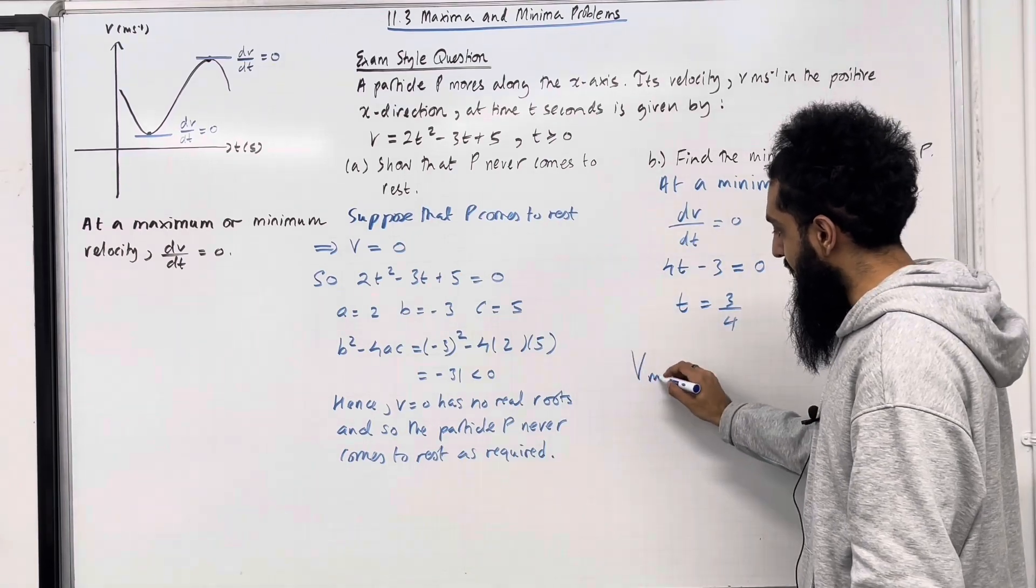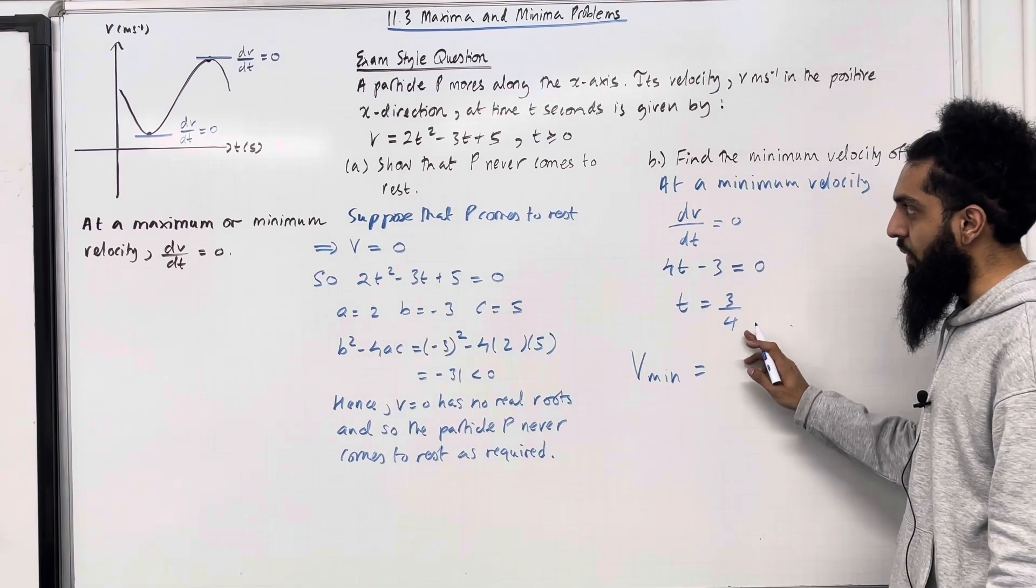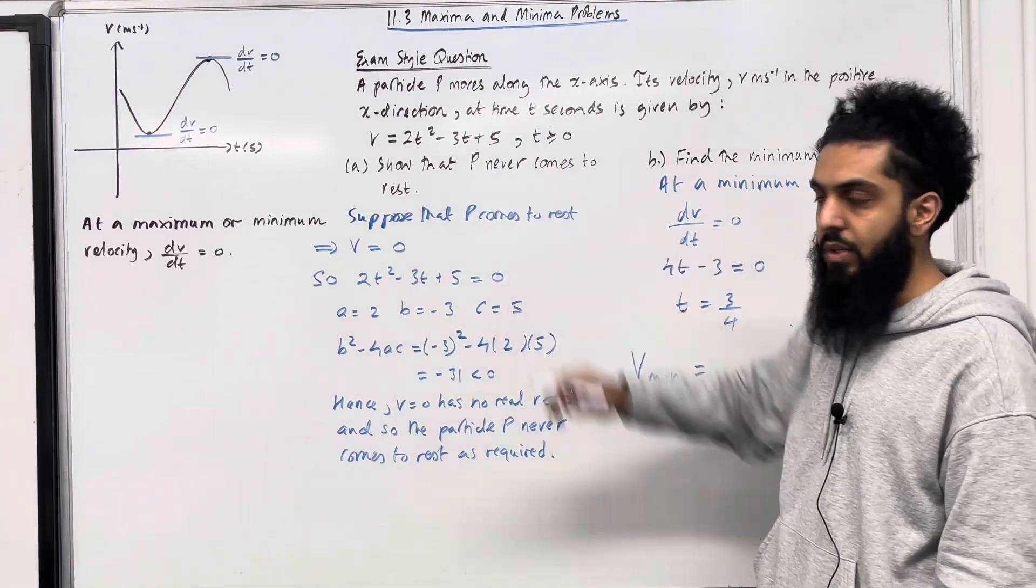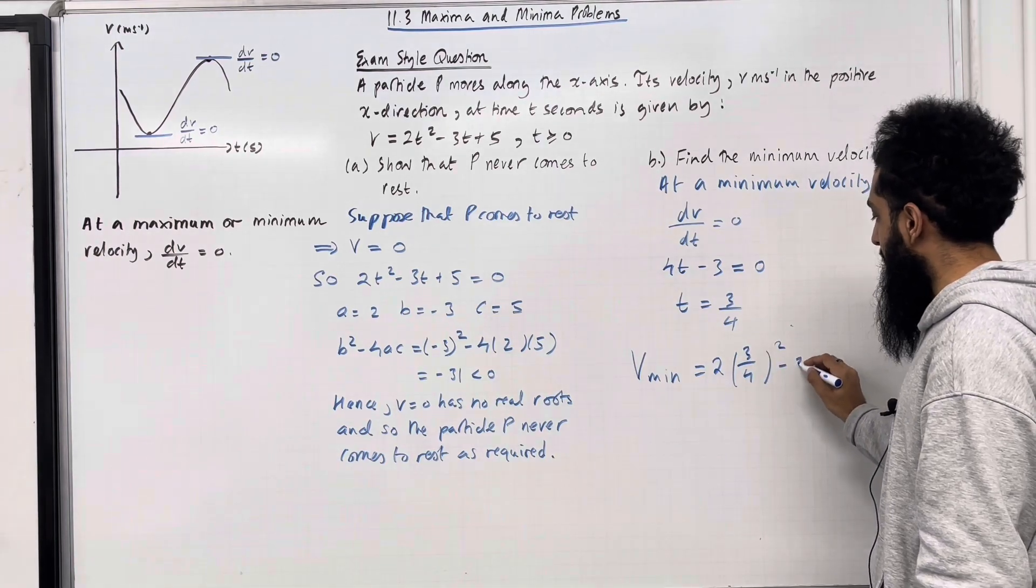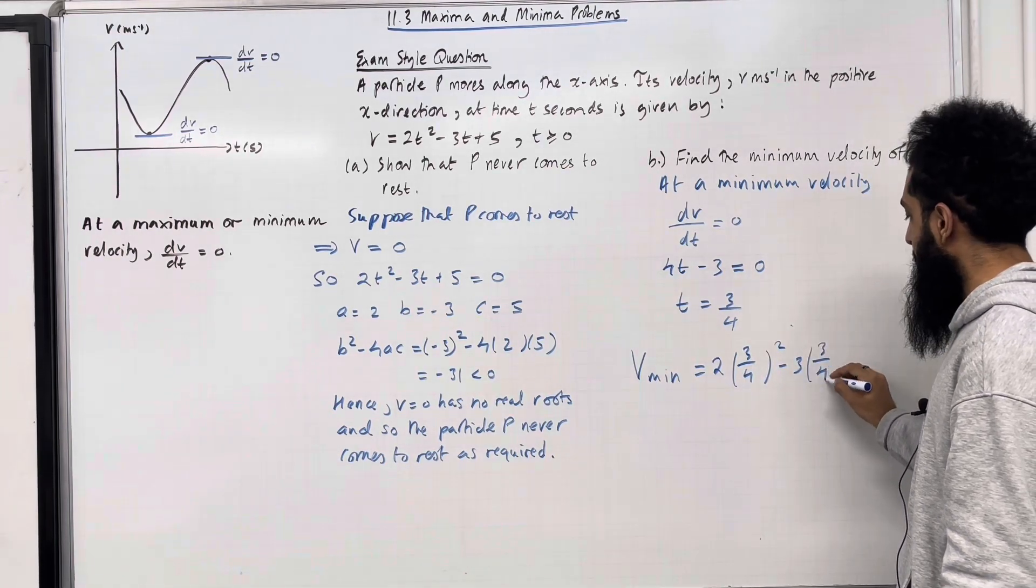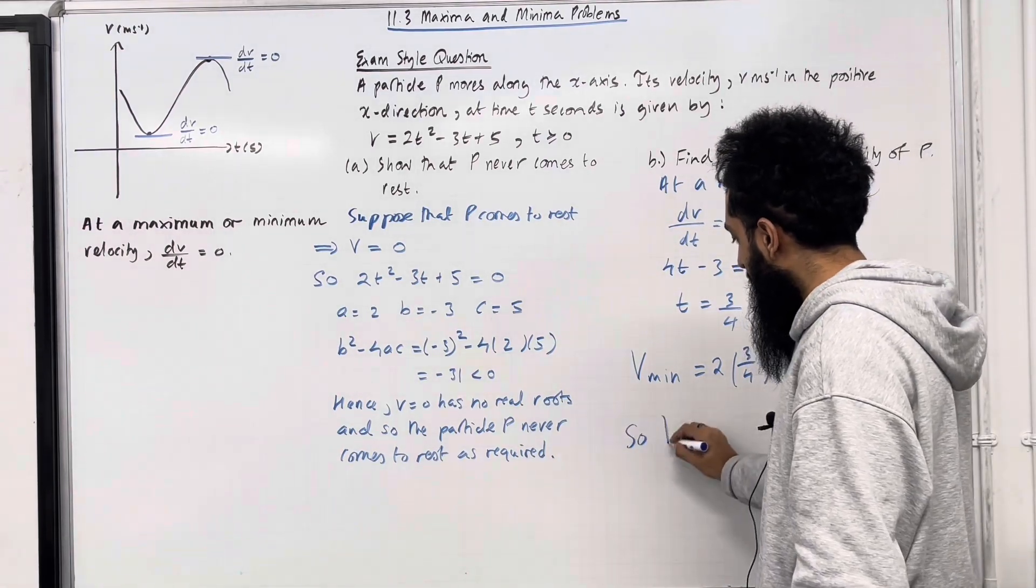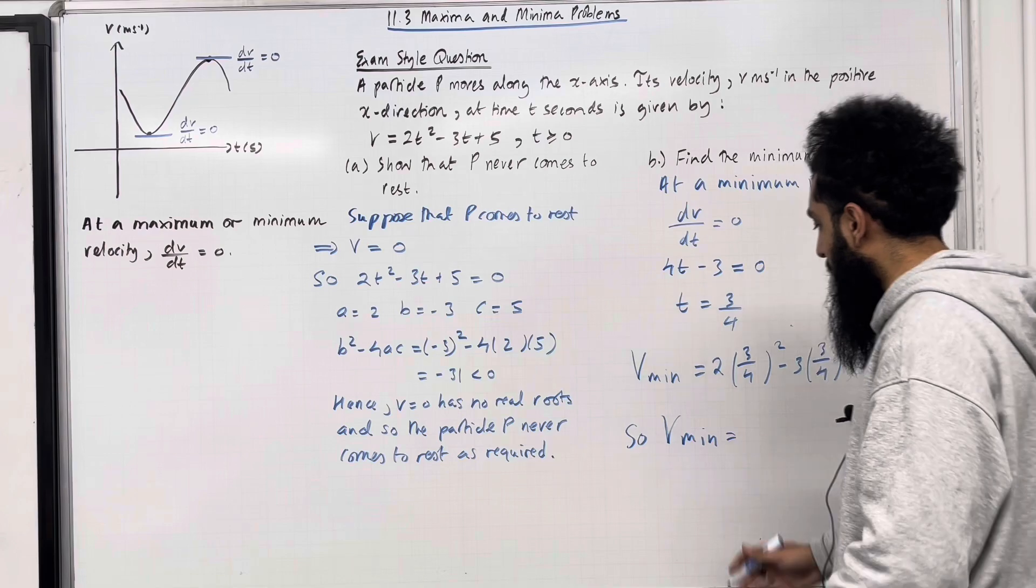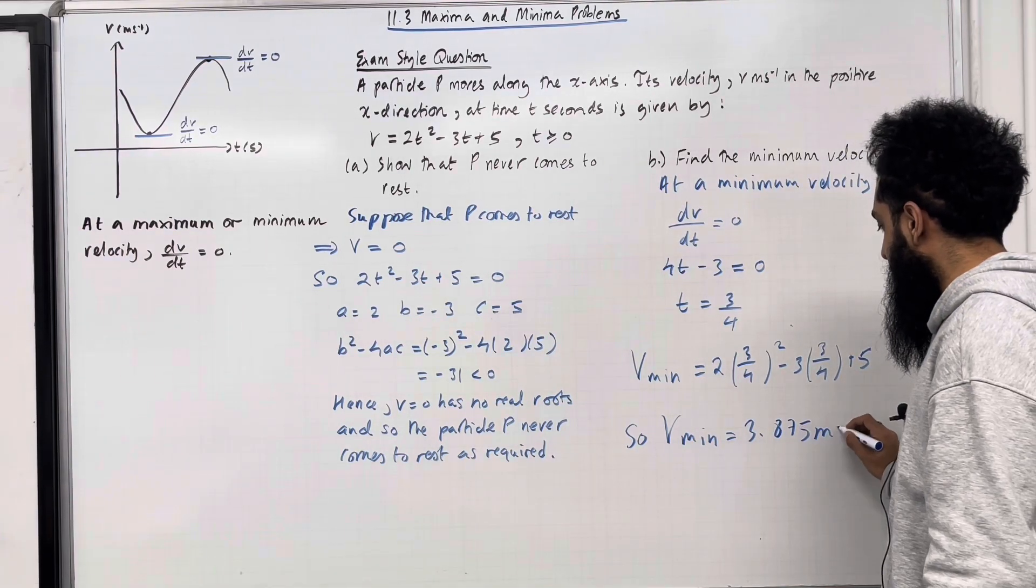So the velocity is minimized when t equals 3/4. We can substitute t = 3/4 into the velocity equation. So we have 2(3/4)² - 3(3/4) + 5. So the minimum velocity equals 3.875 metres per second.